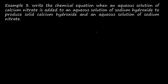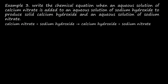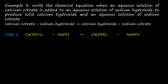Example 3: Write the chemical equation when an aqueous solution of calcium nitrate is added to an aqueous solution of sodium hydroxide to produce solid calcium hydroxide and an aqueous solution of sodium nitrate. In the reactant side, calcium nitrate and sodium hydroxide are present; in the product side, calcium hydroxide and sodium nitrate are present. The first step is to translate this statement into a skeletal equation. The formula for calcium nitrate is Ca(NO₃)₂, for sodium hydroxide is NaOH, for calcium hydroxide is Ca(OH)₂, and for sodium nitrate is NaNO₃.